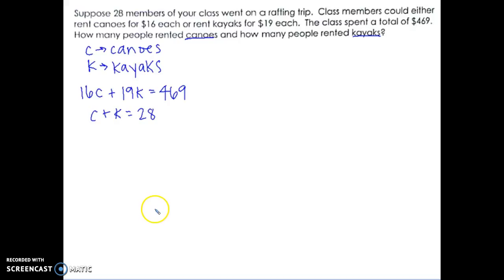So now I can solve. I'm going to solve this thing by substitution. I'm going to pick a variable, get it by itself, and I'm going to pick C. So I'm going to subtract K from both sides, so then C equals negative K plus 28. Now this C is what I'm going to plug in and substitute for C in the first equation.